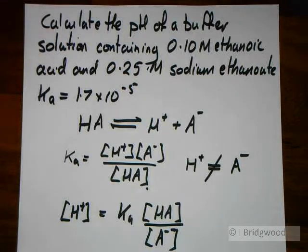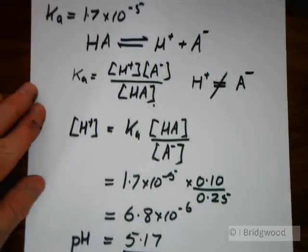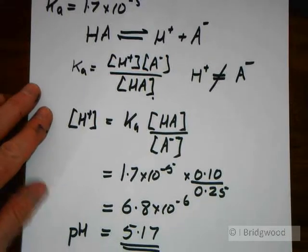Buffer calculation number two. Now we've already seen how we can calculate the pH of a buffer knowing the concentrations of the ethanoic acid and the sodium ethanoate. We've got a value here of 5.17.